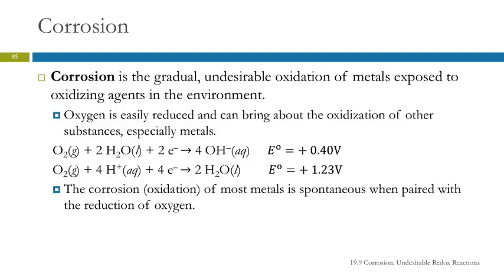Corrosion is the gradual, undesirable oxidation of metals that are exposed to oxidizing agents in the environment. We think of this most familiarly as rust. Iron rusts, and other metals corrode as well, but iron rusting is the biggest problem.